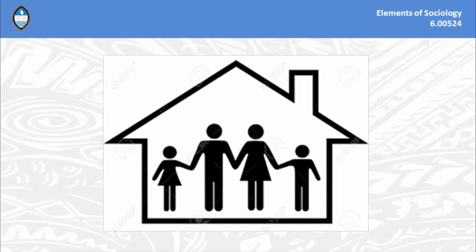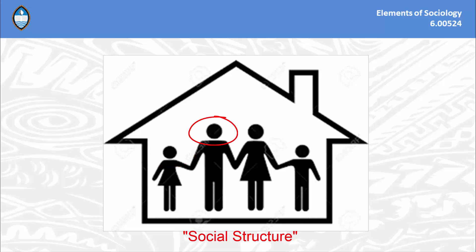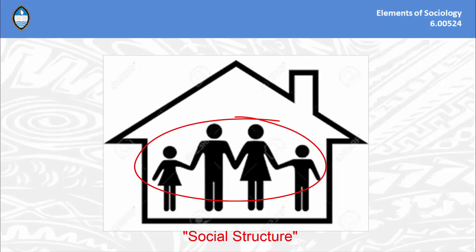In the same way, society has its own structure, called social structure. The parts of social structure are persons. As this illustration shows, the family holding hands and standing together in the building — each one of them has a status and a role to play in social structure.